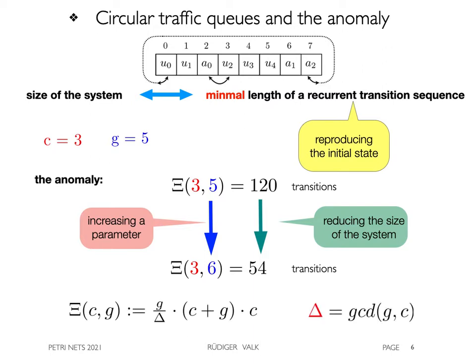In an earlier paper, we proved that the formula for the length of a recurrent transition sequence contains the greatest common divisor GCD of G and C in the denominator. Hence, increasing delta reduces the size.